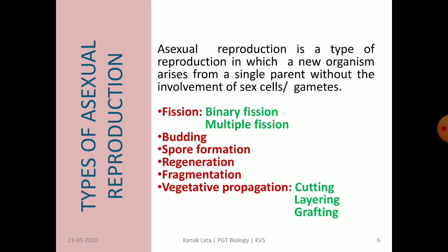The main types are fission, which may be binary or multiple, budding, spore formation, regeneration, fragmentation, and vegetative propagation or vegetative reproduction. Vegetative propagation may involve cutting, layering, or grafting. So let us discuss them one by one.